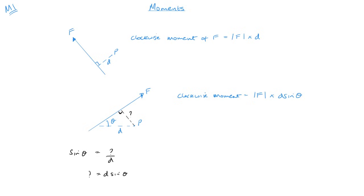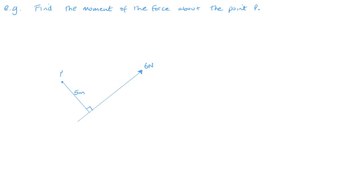So let's look at the first example. Here we have a six Newton force and it's five meters from P and that's perpendicular. So our moment is going to be six times five or 30. Now the units is Newton meters, because it's the force times the distance. So Newton meters, it could be Newton centimeters if it was in centimeters.